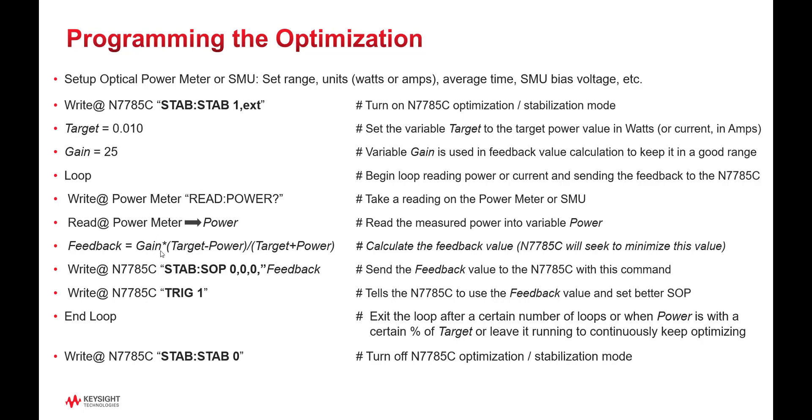with the gain value to be somewhere in the range of 1 to 10 or 20, somewhere in there, not too big, not too small. We can optionally divide this all by the target plus the power value or current value. That causes it to decrease a little faster.